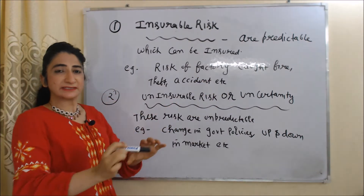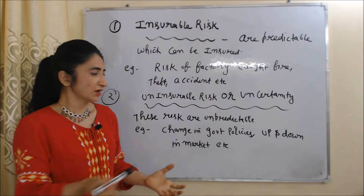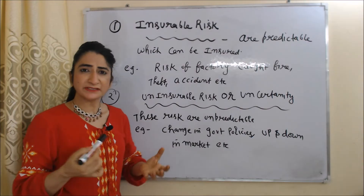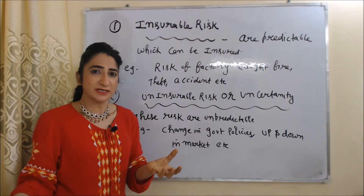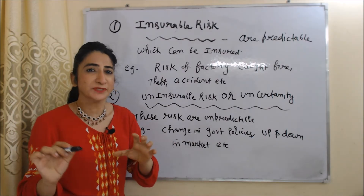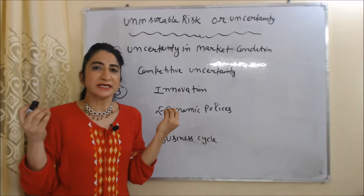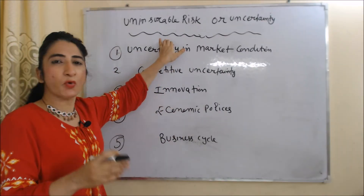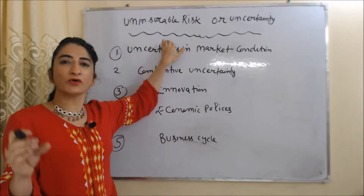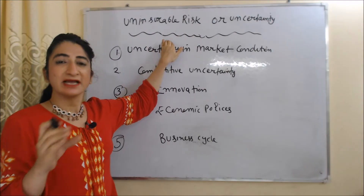Uninsurable risks are unpredictable risks. For example, a sudden change in government policy or so many ups and downs in the market. According to this theory, profit is only the reward of uninsurable risk.